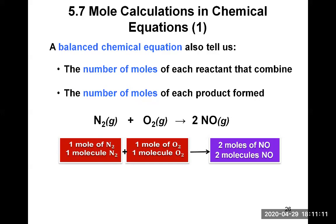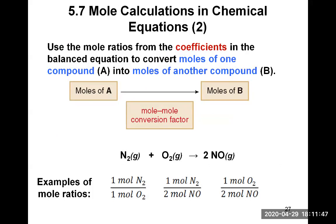Making only one molecule react with another is not possible, and we typically talk in numbers of moles in chemistry. So the ratio is the same: one mole of N2 will react with one mole of O2 to make two moles of NO. The chemical equation gives you those ratios or proportions of reactants and products, and you can use those mole ratios from the coefficients in the balanced chemical equation to convert moles of one compound into moles of another.